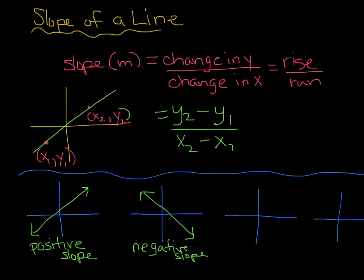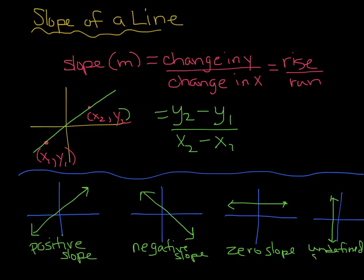The other two types are: if your line is completely flat — a horizontal line — we say it has a slope of 0. On the other hand, if it is a completely vertical line, we say it is undefined. You may have heard it referred to as no slope, but we are going to call it undefined in this class.